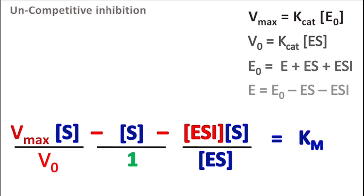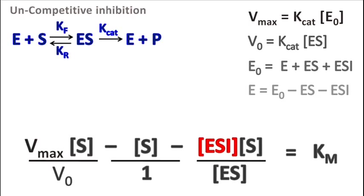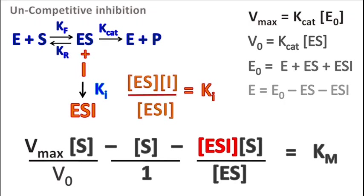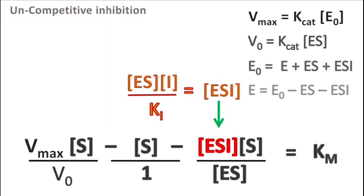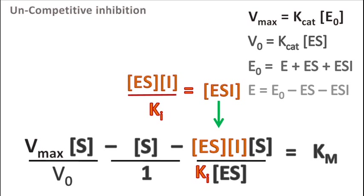Now let's derive the equation for ESI. The inhibitor reacts with the ES complex to form ESI. So ES into I upon ESI is equal to Ki. Here ESI can be replaced as ES into I upon Ki.